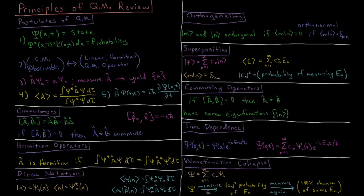The bra-ket notation indicates the integral of psi-star times psi over all space, for states m and n. Two different states are said to be orthogonal if their overlap integral — their bra-ket — equals zero. They are orthonormal if they are both orthogonal and normalized: the integral equals 1 when m equals n, and 0 when m does not equal n, as indicated by the Kronecker delta.